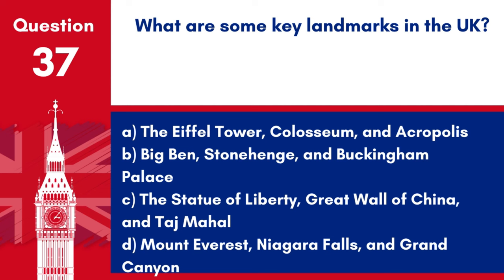Question 37. What are some key landmarks in the UK? A. The Eiffel Tower, Colosseum and Acropolis. B. Big Ben, Stonehenge and Buckingham Palace. C. The Statue of Liberty, Great Wall of China and Taj Mahal. D. Mount Everest, Niagara Falls and Grand Canyon. Answer: B. Big Ben, Stonehenge and Buckingham Palace. Key landmarks in the UK include Big Ben, Stonehenge and Buckingham Palace.